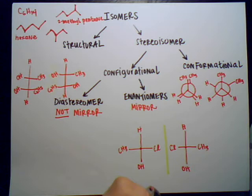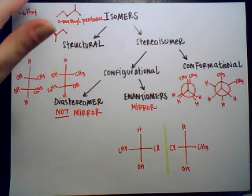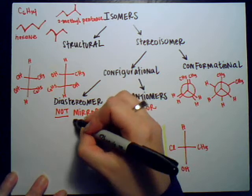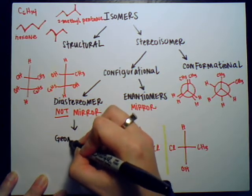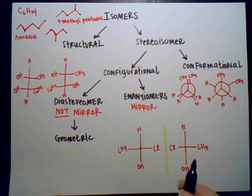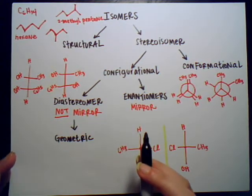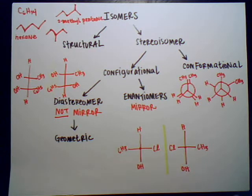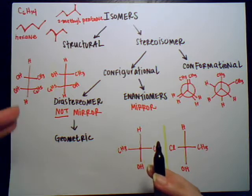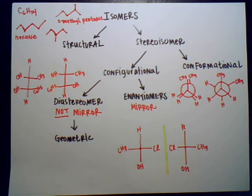One last subcategory of diastereomer is a geometric isomer. It's still a diastereomer because it's not a mirror image of each other, but it's not as complex as the Fischer projection example. Basically, this is what we call cis and trans configuration.